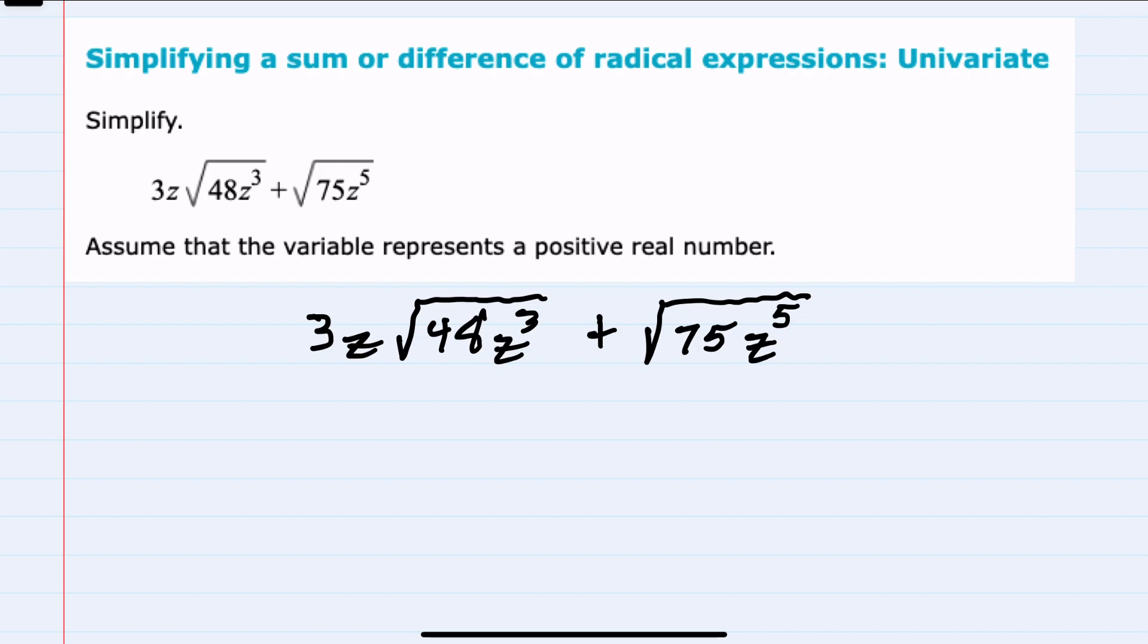For this example, the expression we're simplifying includes addition, and in order to combine like terms, we would need for both the variable and radical parts of each of these two to be the same. While they're not currently the same, we can simplify each of these, and typically after simplifying, they will be the same.